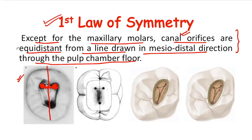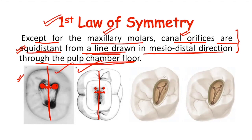Canal orifices are equidistant from the line drawn in the mesiodistal direction through the pulp chamber floor. You can also see in this image that this is the line drawn in the mesiodistal direction, and if one orifice is located at a certain distance from this line, the other orifice will be located equidistant from it. However, in the case of maxillary molars, this is not applicable due to the presence of the oblique ridge, so they are excluded from the laws of symmetry.